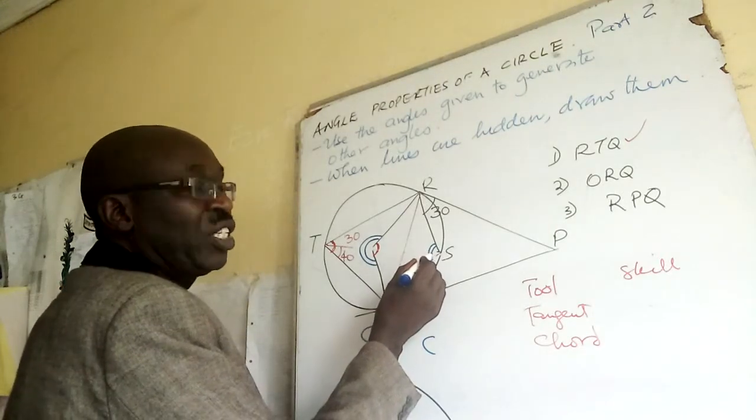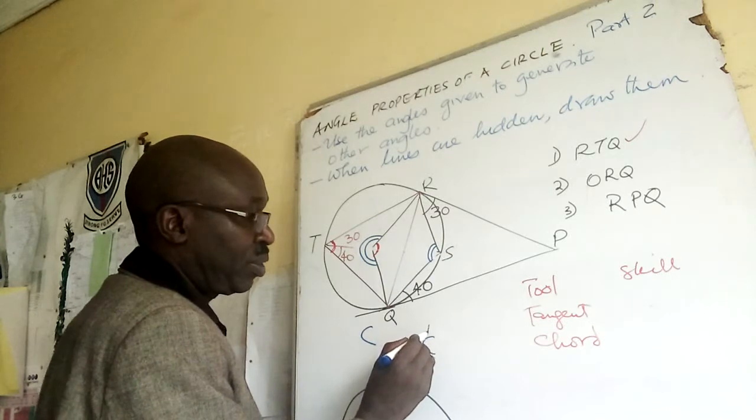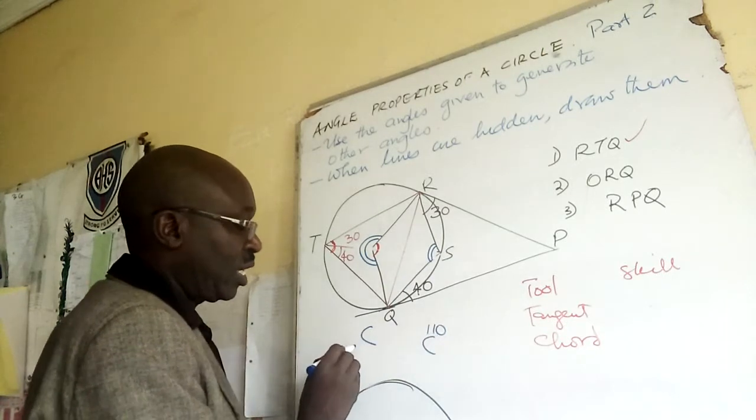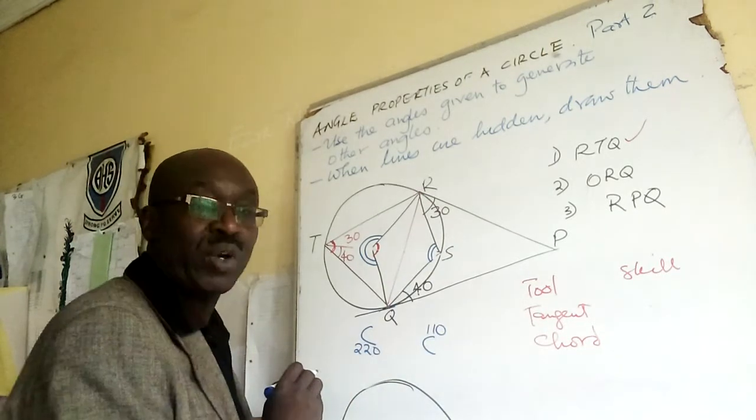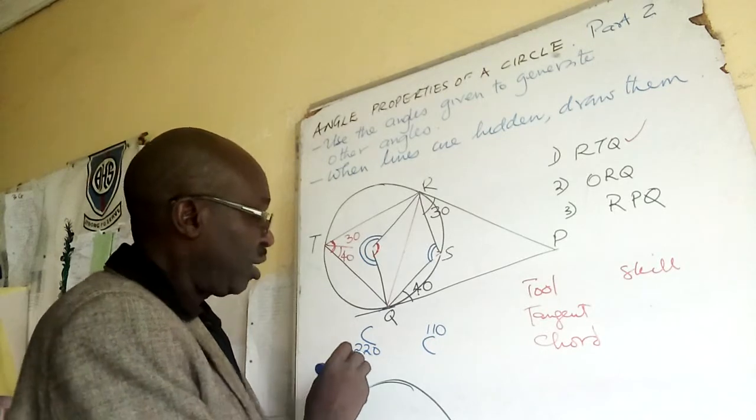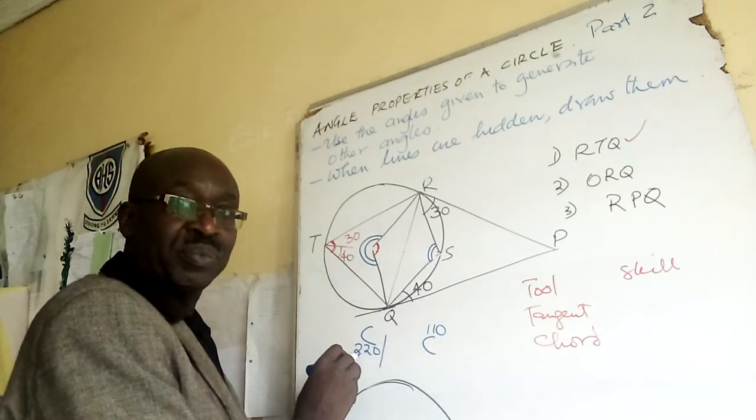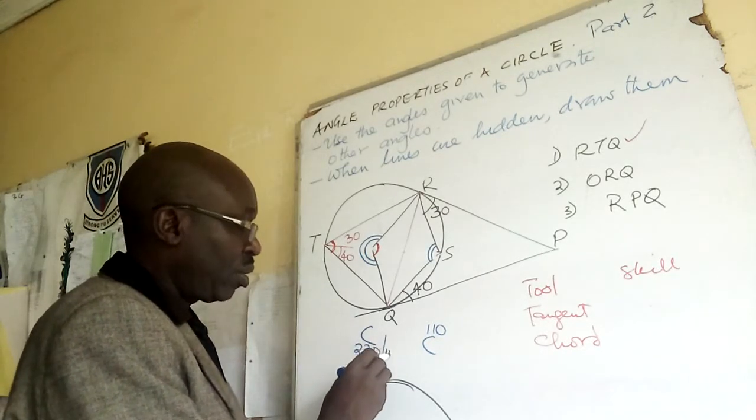So after I've known this is 110, this is 110, then at the center will be double, 220. And if this is 220, here will be 140.